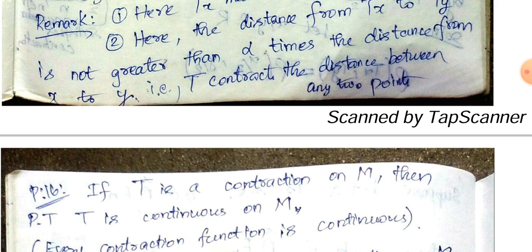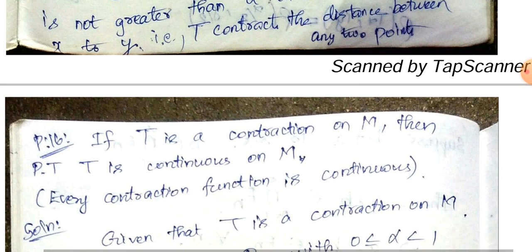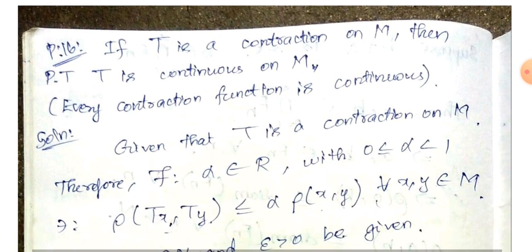That means ρ(Tx, Ty) is not greater than the distance between x and y — it is reduced. That is correct. This is Problem 16: If T is a contraction on M, then prove that T is continuous on M. That is, every contraction function is continuous.